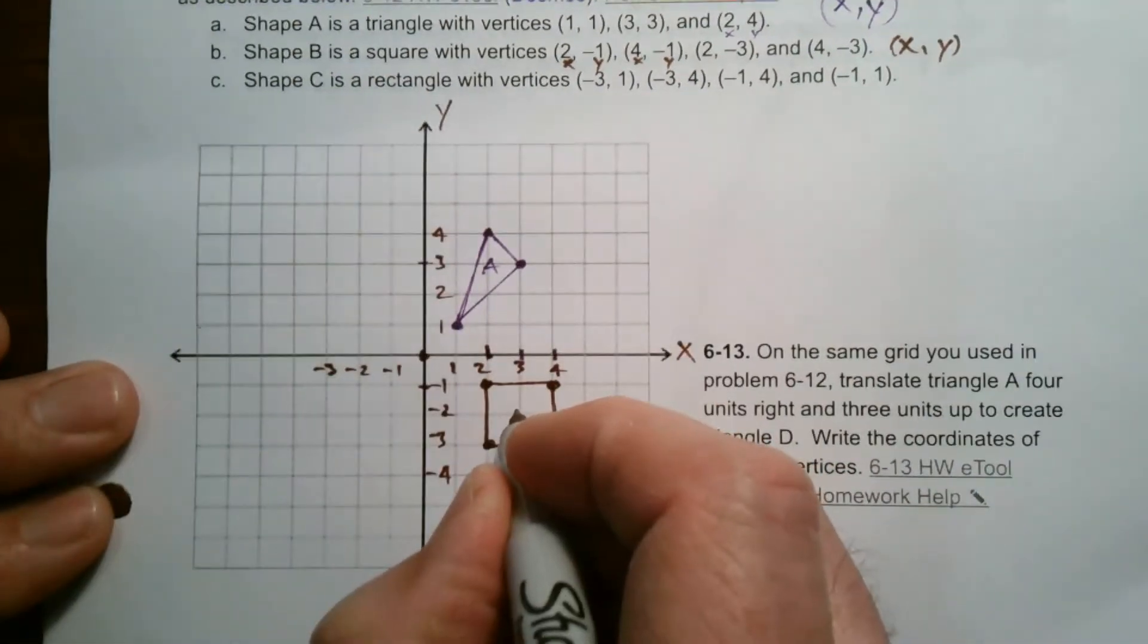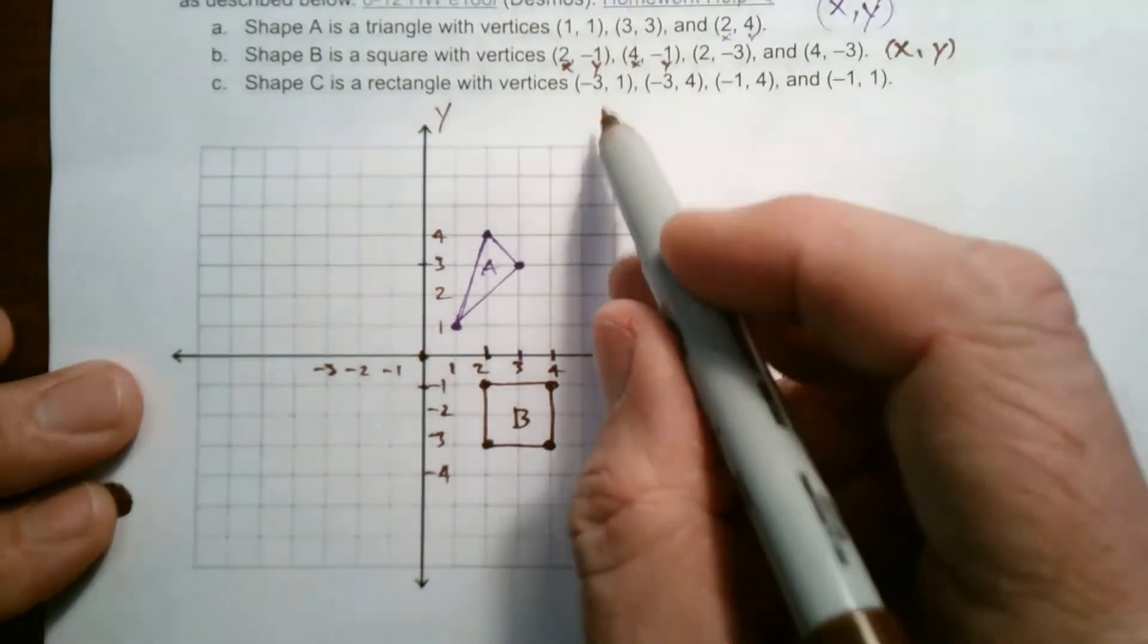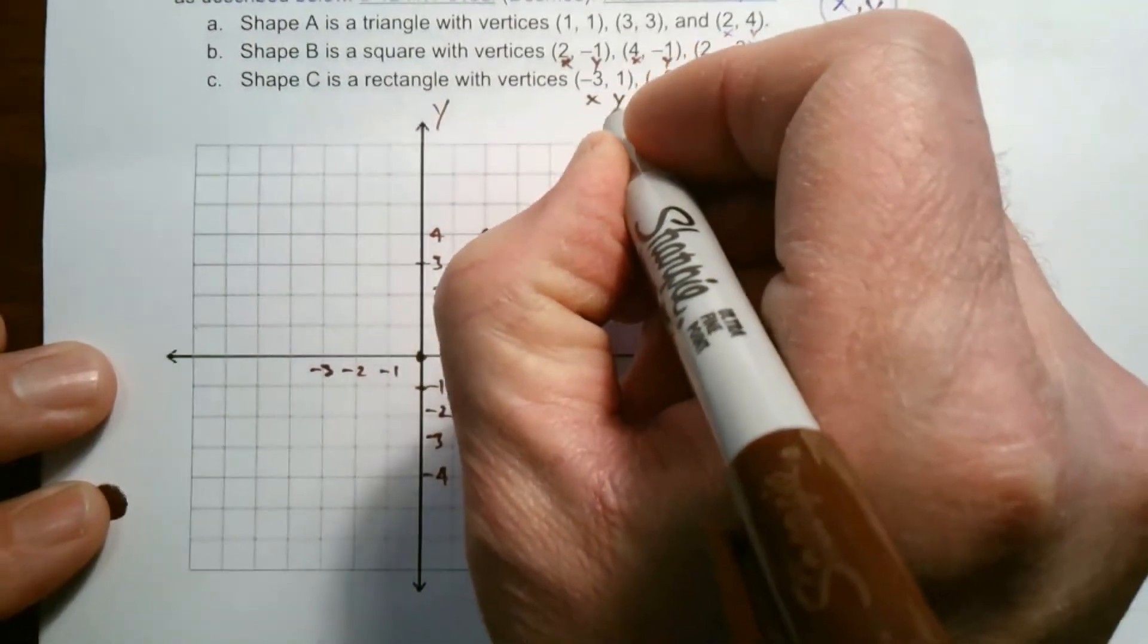And that shape is a square. The last shape, we call that one B. And then last one is C. C is a rectangle. Rectangle being, these are my vertices. Once again, all the vertices are x, y.